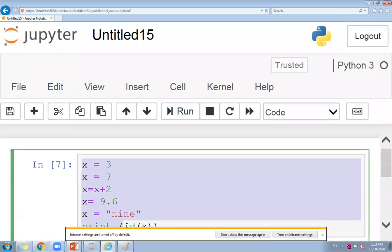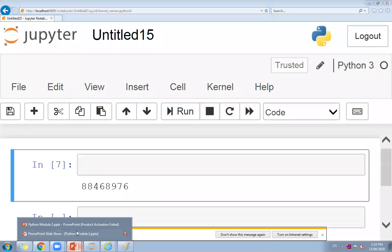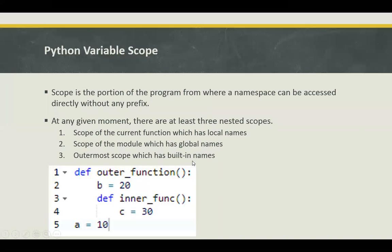The second thing we want to discuss is scope. We will discuss scope briefly now and see it in detail later when we discuss different programs. The scope is the portion of a program from where a namespace can be accessed directly without any prefix.